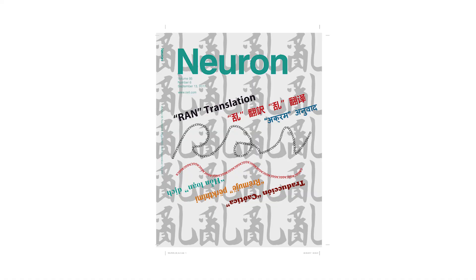We're really excited that our paper was highlighted and made the cover of Neuron. The cover is a play on the acronym RAN translation, which stands for repeat-associated non-ATG translation. The acronym RAN in Japanese literally means chaos, and because RAN translation was so unexpected initially, it created some chaos in the translation field. The cover is a play on words where chaos is translated into six different languages representing the six different RAN proteins, and the languages also represent the truly international collaboration that we have in our lab.